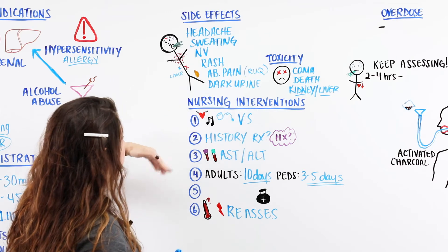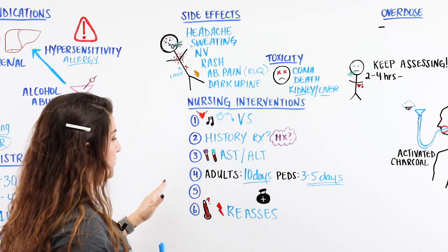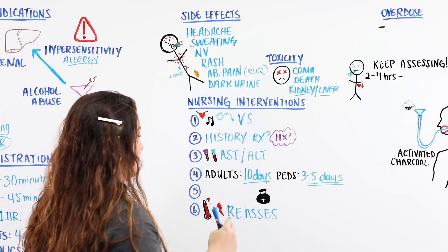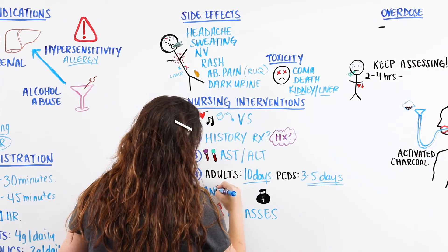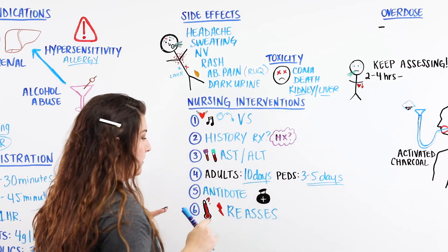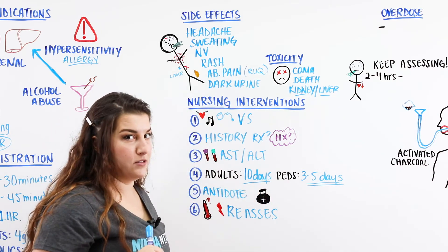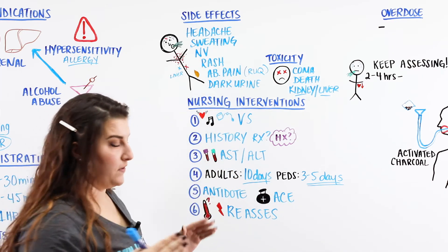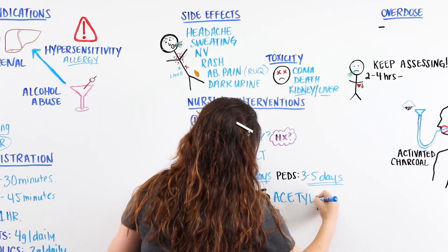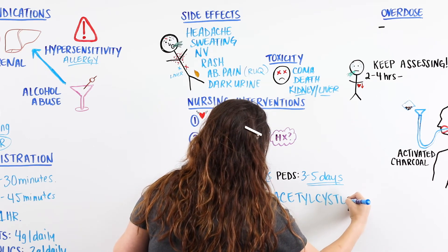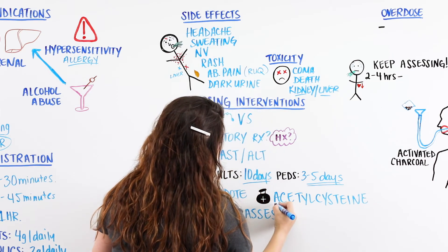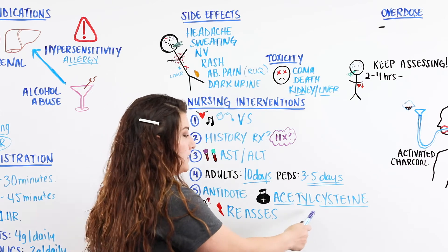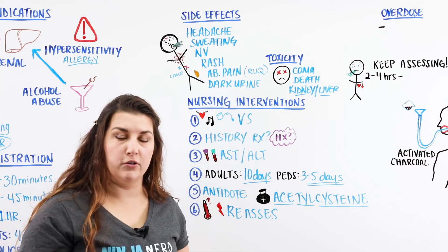We've been reassessing vitals and monitoring blood work. If a patient comes in with an overdose or toxicity situation that needs to be reversed, we give the antidote. The antidote for acetaminophen is acetylcysteine. Remember: acetaminophen (Tylenol) — antidote is acetylcysteine. That's the medication we're going to use if a patient has overdosed, either accidentally or intentionally.